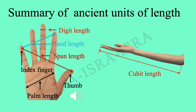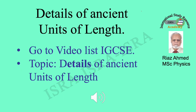Now I am going to present the summary of what we have studied in the ancient units of length. Digit length is marked with a small red line. Hand length is marked with a double arrow blue line. Span length is marked with a double arrow dark red line. Palm length is marked with a double arrow black line. Cubit length is marked with a double arrow big red line.